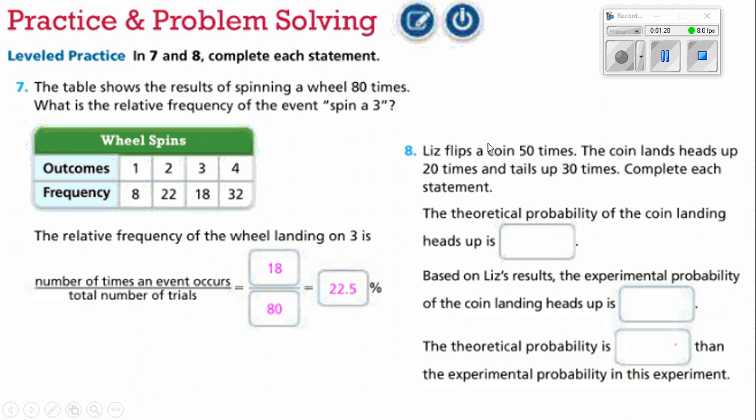Liz flips a coin 50 times. The coin lands heads up 20 times and tails 30 times. Complete each statement. We would expect that the theoretical probability of the coin landing on heads is going to be 50% of the time. But based on Liz's results, the experimental probability of the coin landing on heads is 20 times out of 50. That's 20 divided by 50, and that's going to give you 40%.